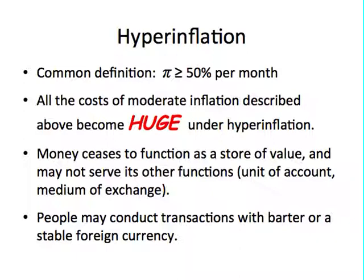One important problem of hyperinflation is the distortion in the tax system. In a normal case with moderate inflation, there is a delay between levying an income tax on someone and collecting it — taxes are typically paid every three months. So although you have income tax to pay per month, taxes are actually paid after three months. With moderate inflation, this delay doesn't really hurt the government much because money doesn't significantly lose its value over those three months.